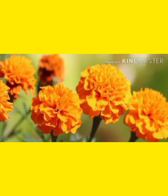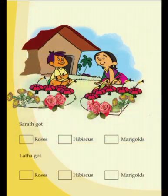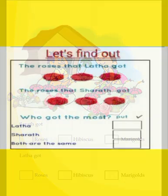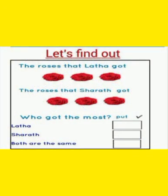Then let's count how many marigolds are here. Yes, five. Now we know how many flowers Lata and Sharath got. See here, let's find out the roses that Lata got and the roses that Sharath got.